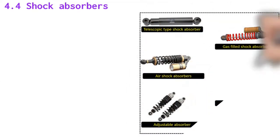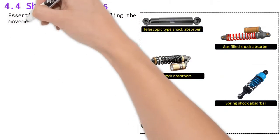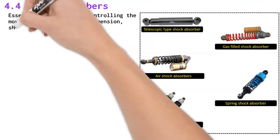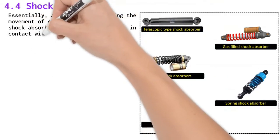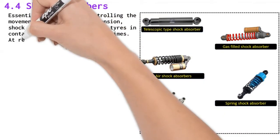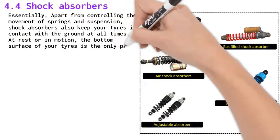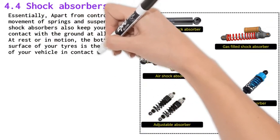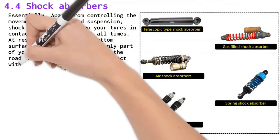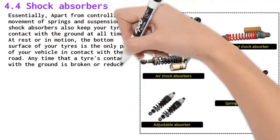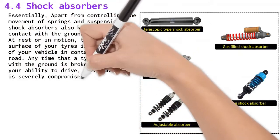Shock absorbers. Apart from controlling the movement of springs and suspension, shock absorbers also keep your tires in contact with the ground at all times, whether at rest or in motion. The bottom surface of your tires is the only part of the vehicle in contact with the road. Any time that a tire's contact with the ground is broken or reduced, your ability to drive, steer and brake is severely compromised.